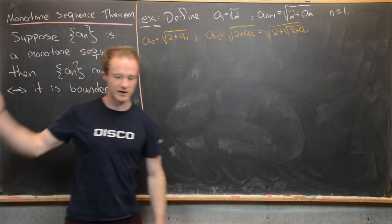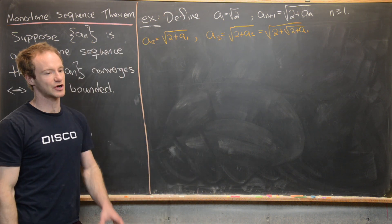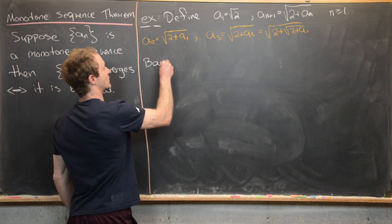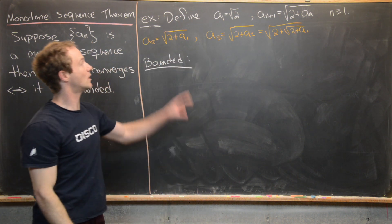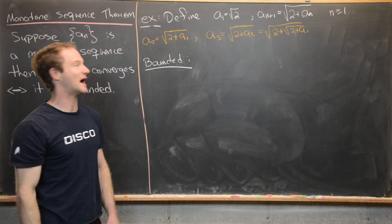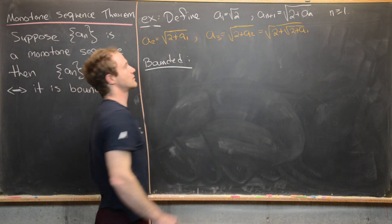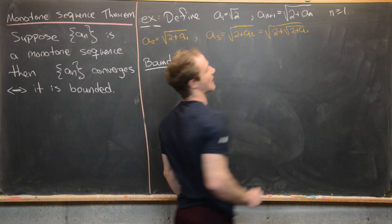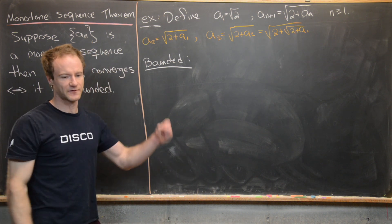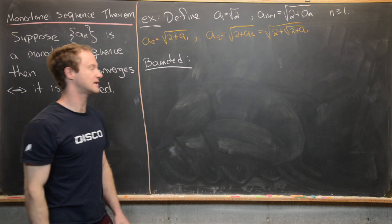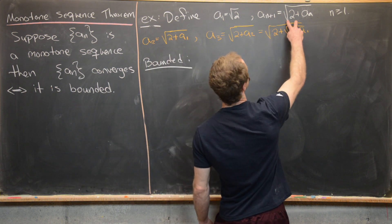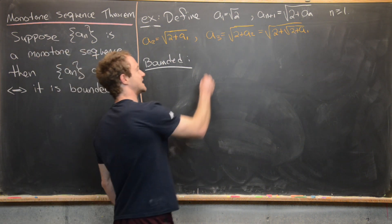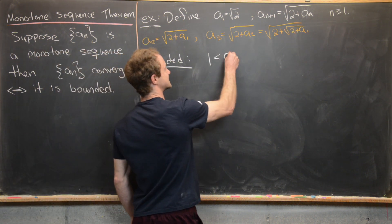We're going to use the monotone sequence theorem, so we need to show this sequence is both bounded and monotone. We'll first show it's bounded, beginning by noting it's bounded below by 1. The square root of 2 is bigger than 1 — it's about 1.4. And since we're adding something positive under the radical each time, all terms are bigger than the square root of 2, so 1 is less than a sub n.